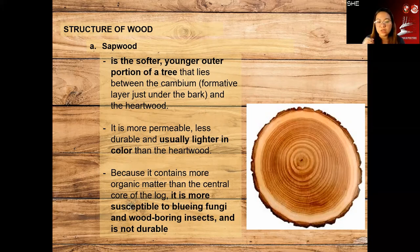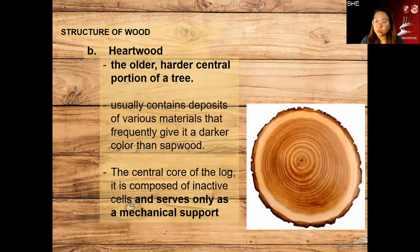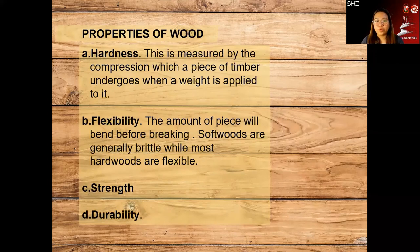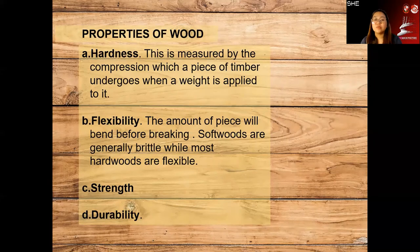The heartwood is the older, harder central portion of the tree and usually contains deposits of various materials that frequently give it a darker color than sapwood. It is the central core of the log and is composed of inactive cells that serve only as mechanical support for the whole tree. Wood generally has different properties. Hardness is measured by the compression a piece of timber undergoes when a weight is applied to it.